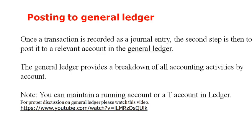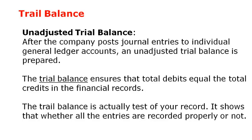After recording in the general journal, the third important step is to post these entries from the general journal to the general ledger. Posting means the process of transferring a transaction from the general journal to the general ledger. You can maintain the general ledger in two ways: either using the running balance form or by simply making T-accounts — one separate T-account for each asset, liability, and owner equity, each containing information about only one item.